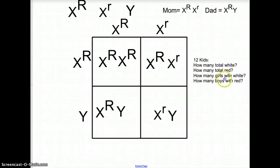How many girls with white? Okay, so now it gets trickier. So you'd have 12 kids. How many of them are most likely to be girls with white eyes? Well, zero. Zero of them would be girls with white eyes. How many of them will be boys with red eyes? You'd say, all right, well, boys with red eyes is going to be one out of four. So three out of 12.